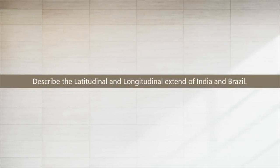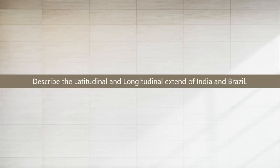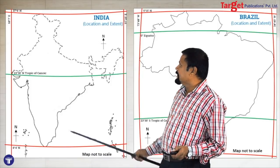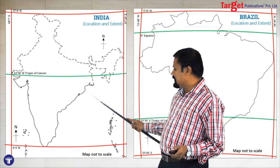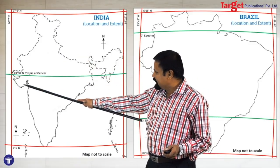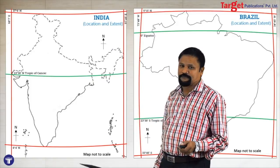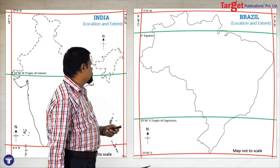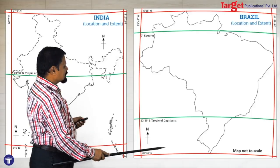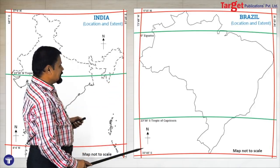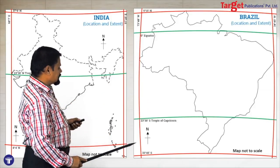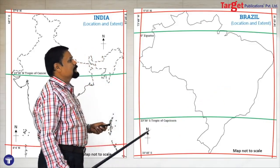This is lesson number two. The question is: describe the latitudinal and longitudinal extent of India and Brazil. You will draw the India map first with the help of the stencil. Then draw the northernmost latitude, southernmost latitude, and write the degrees. Mark the Tropic of Cancer, the westernmost longitude, and the easternmost longitude. In the same way, draw the Brazil stencil, show the northernmost and southernmost latitudes with degrees, show the equator, Tropic of Capricorn, and also the westernmost and easternmost longitudes.